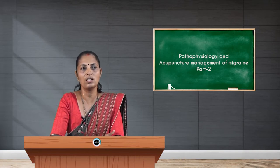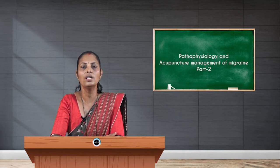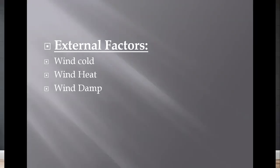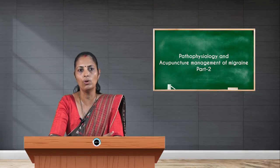The main causes are external and internal. Among the external exogenous causes, they are wind cold, wind heat, and wind damp. The deficient internal conditions include: chi deficiency — primarily from overwork mentally and/or physically; blood deficiency — primarily after long-term illness where the body has been weakened; and kidney deficiency — primarily from old age or excessive sexual activities.